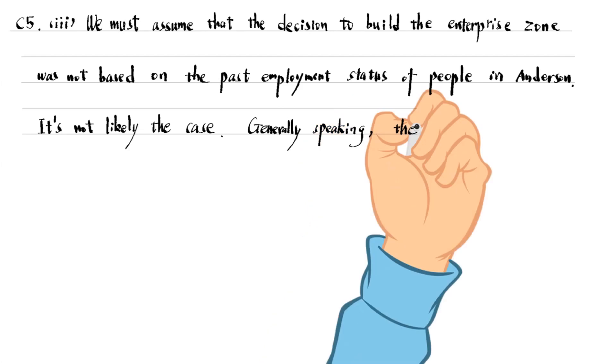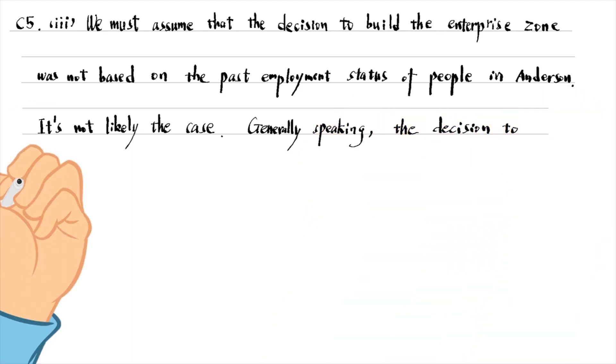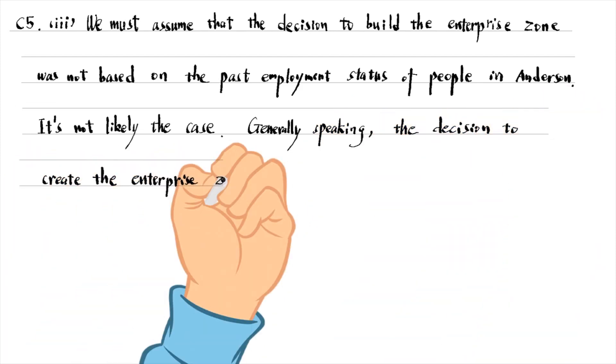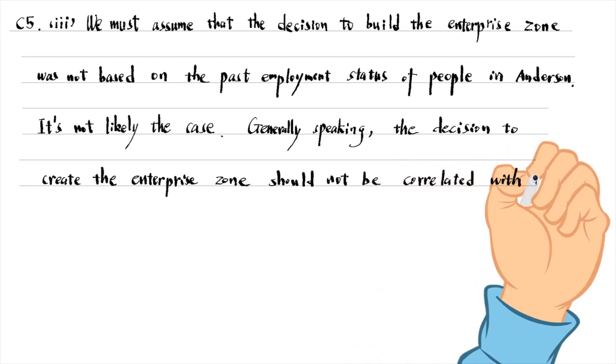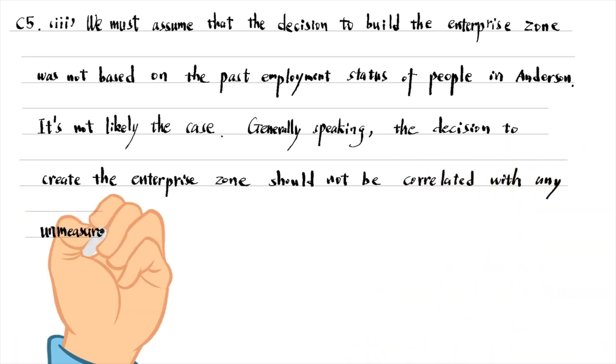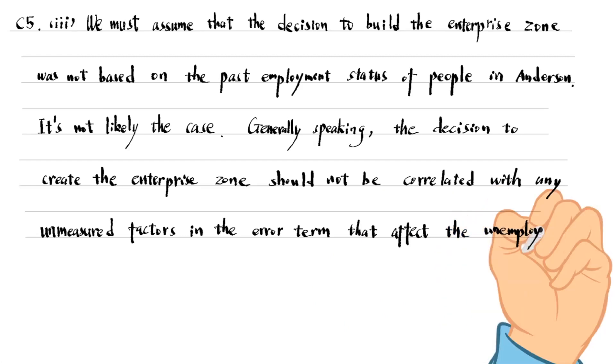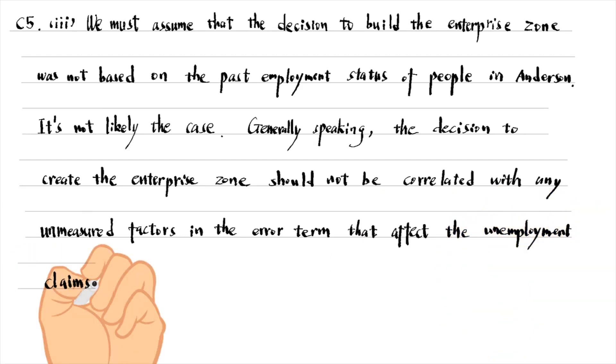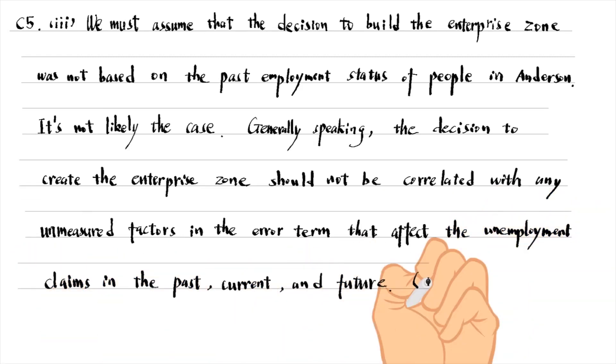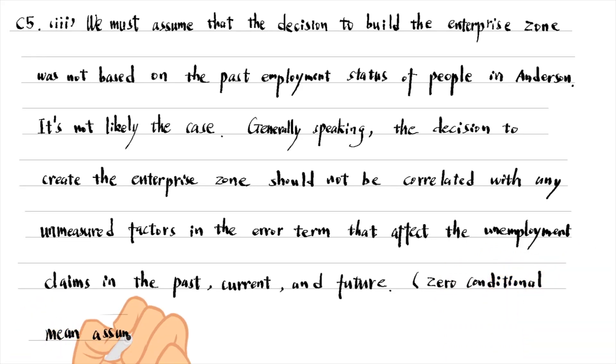Generally speaking, the decision to create the enterprise zone should not be correlated with any unmeasured factors in the error term that affect the unemployment claims in the past, current, and future. Which is stated as the zero conditional mean assumption for time series for unbiased OLS estimates.